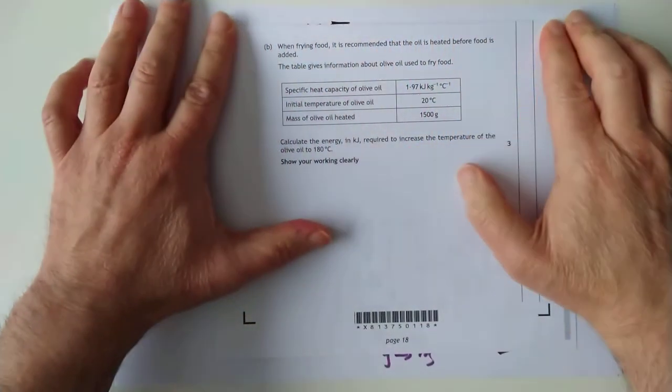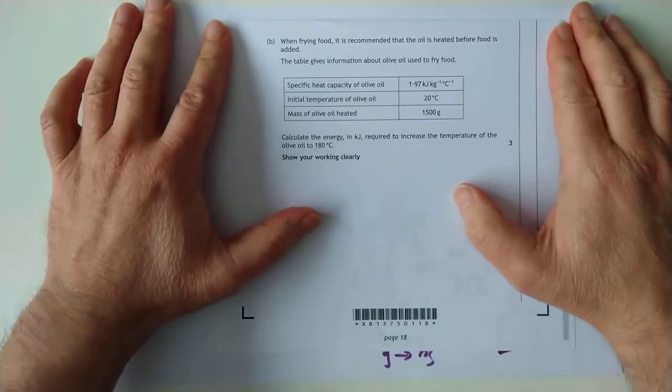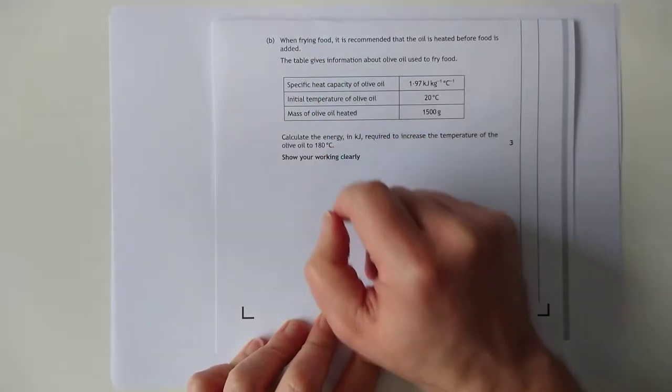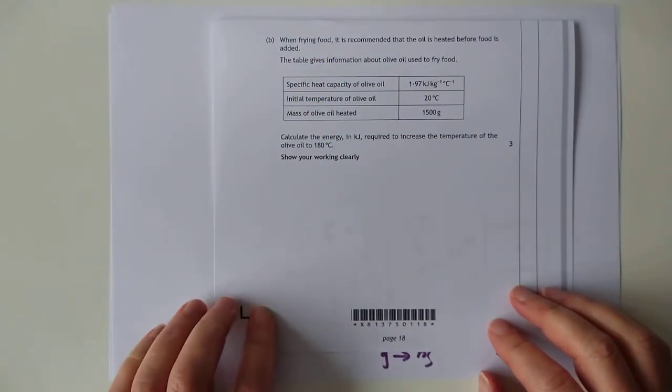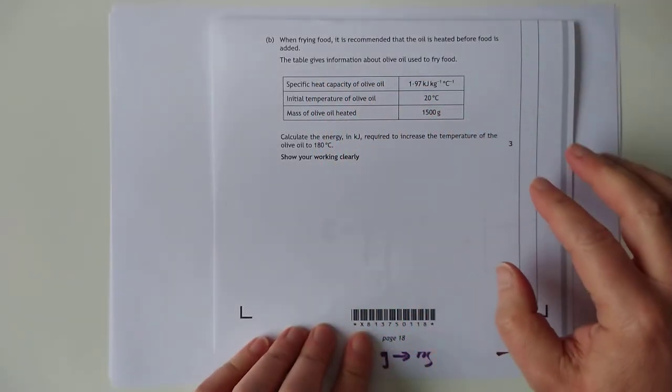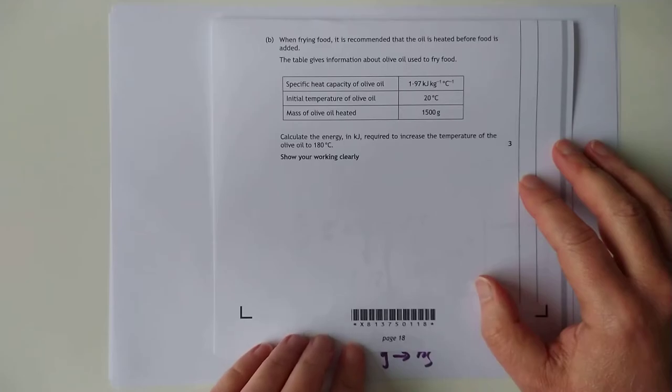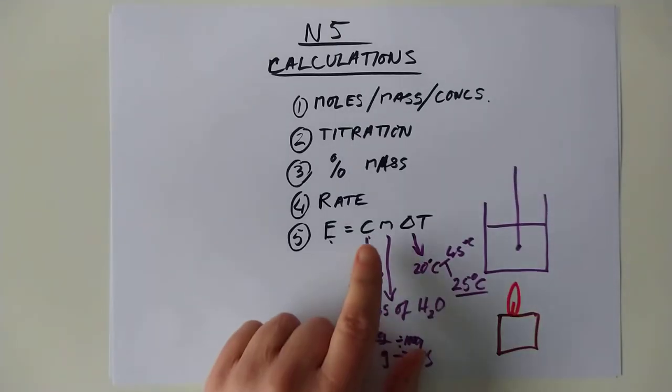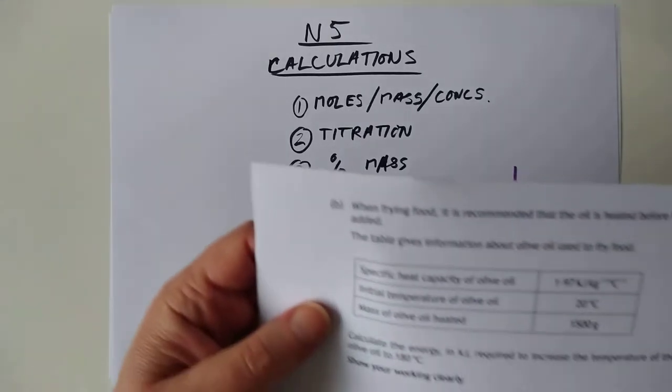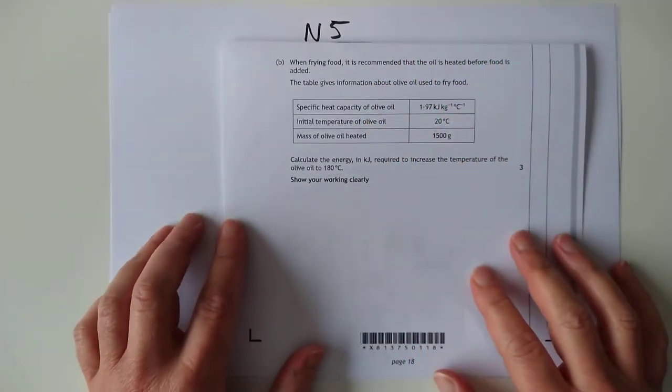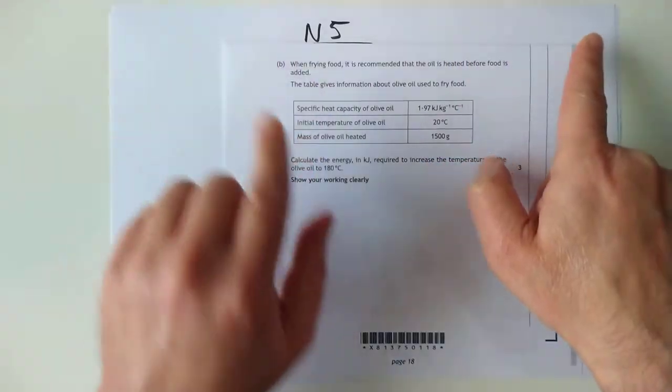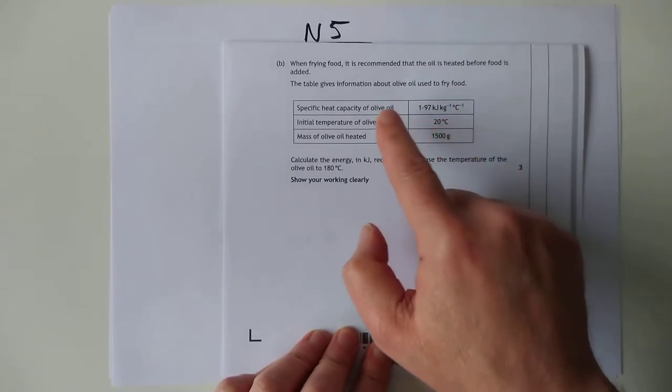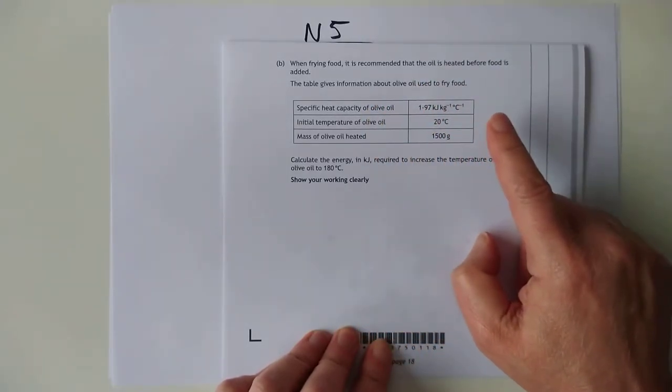Right, so we are back with an SQA example based on olive oil and frying food. The introductory text says when frying food, it's recommended that the oil is heated before the food is added. This table gives information about the olive oil used to fry the food. Now, this is a nice one. This is a sneaky one. Remember I said that C, M, and delta T are all to do with the water? Well, you're not heating water here. You're heating olive oil. So you need to read the question. The information in the table here is about olive oil.